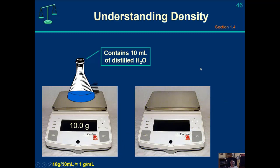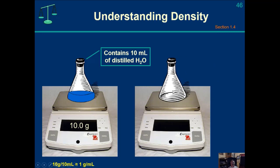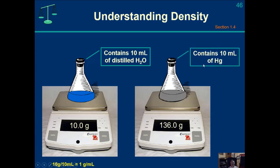Let's compare with another liquid — the only metal that's a liquid at room temperature: mercury. We do exactly the same thing: take an Erlenmeyer flask, hit the tare button, subtract the mass of the flask, and put 10 milliliters of liquid mercury — also known as quicksilver — into the flask. We see that it weighs 136.0 grams. So 136 grams divided by 10 milliliters equals 13.6 grams per milliliter. That's how we measure the density.